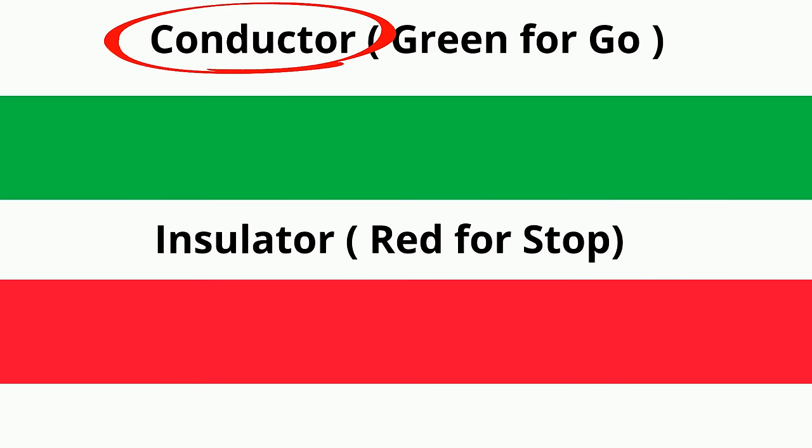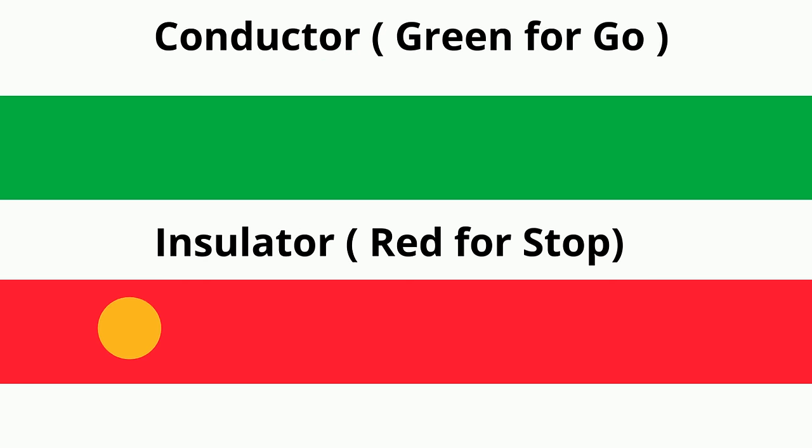A conductor is an object or material that allows the flow of negatively charged electrons in one or more directions, which results in electric current. An electrical insulator is a material in which the electrons do not flow freely.